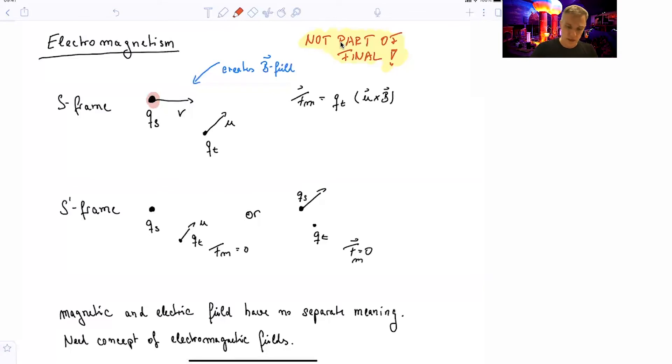So now I have a second charge, a test charge, which is moving with a velocity u. That test charge will experience a magnetic force. The force is equal to the test charge itself, qt, times u cross b, the velocity across the magnetic field. So there is clearly a magnetic force acting on this charge in this reference frame.